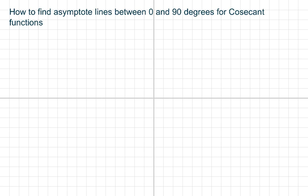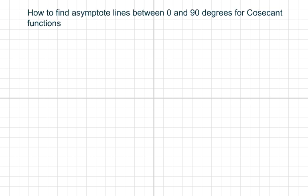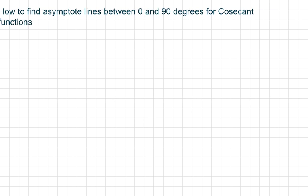Hi everyone, we're going to find the asymptote lines between 0 and 90 degrees. Let me move this back.